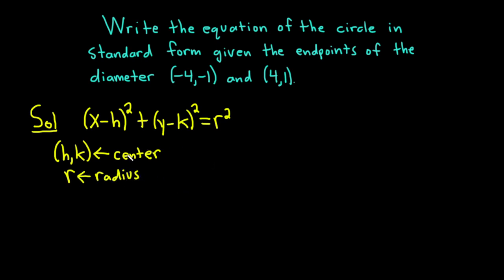So we need two things: we need the center and the radius, and then once we have those, we can plug them into our formula. Let's start by finding the center. We're told that these two points, (-4, -1) and (4, 1), are the endpoints of the diameter. That means that the point right in the middle is going to be the center. That point in the middle is called the midpoint.